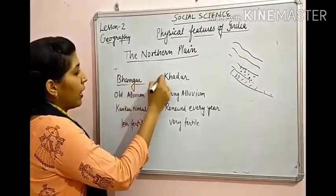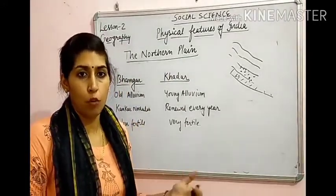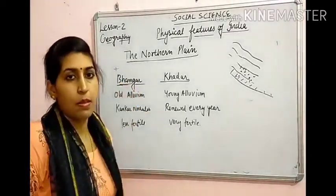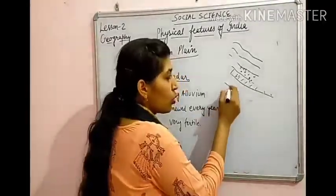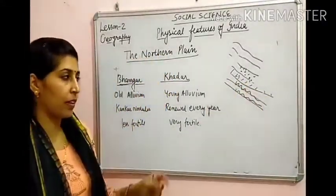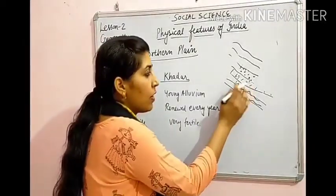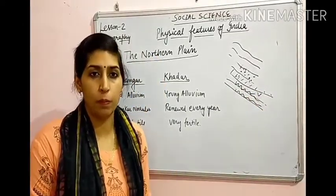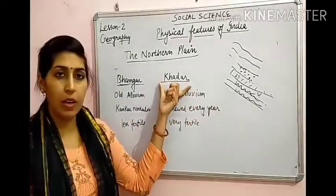Next are the plains of Khadar and Bangar. ये वो area है जो rivers ने बनाया है। Bangar वो area है जहाँ पहले river का पानी flood के समय आता था — यह old alluvium है। Khadar वो area है जहाँ अभी भी हर साल flood आती है और river का पानी पहुँचता है — यह new alluvium है और ज्यादा fertile है।